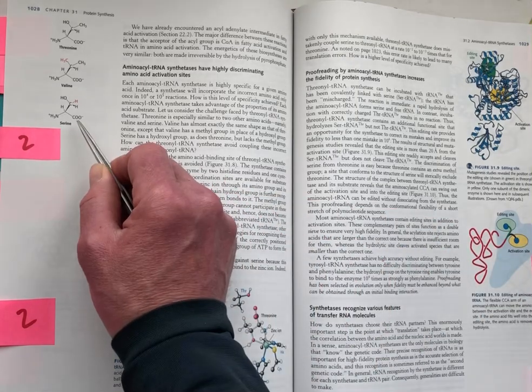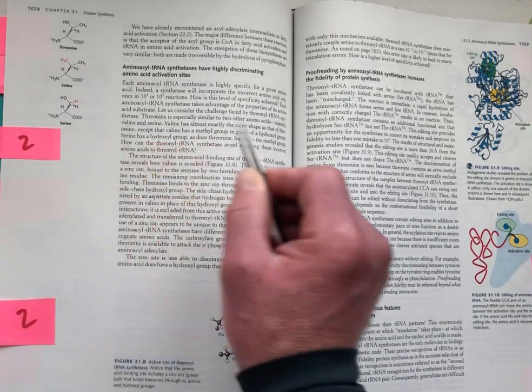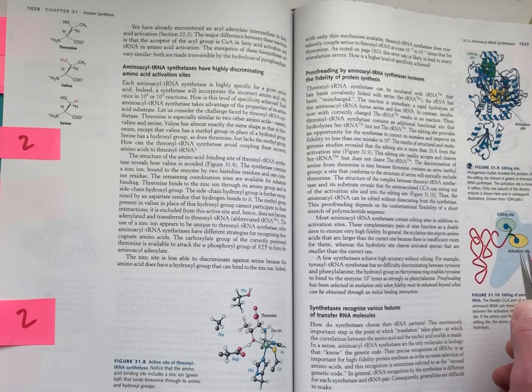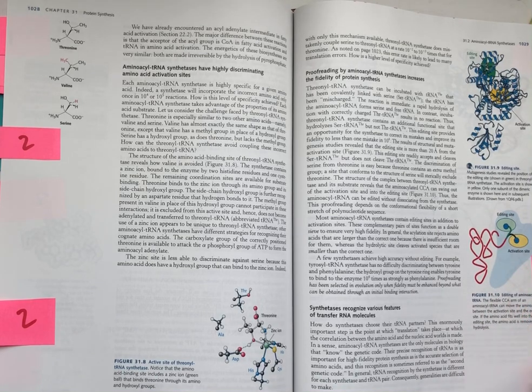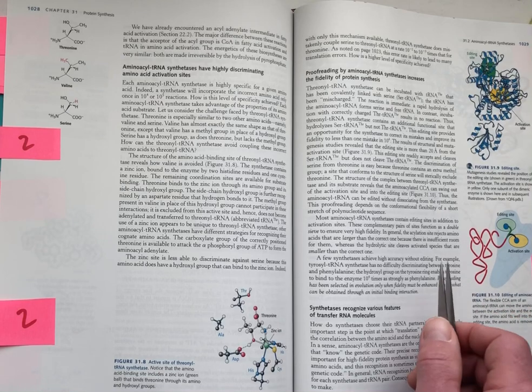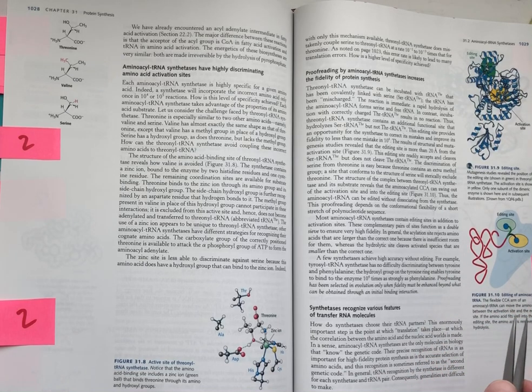if serine accidentally gets attached to the tRNA that's supposed to decode threonine codons, then that now becomes a substrate for the editing site where the amino acid is removed by hydrolysis. And this is referred to as a double sieve type of mechanism.